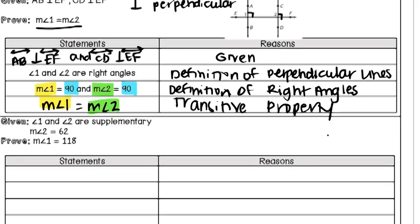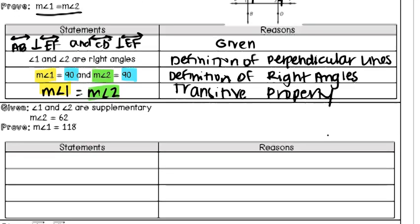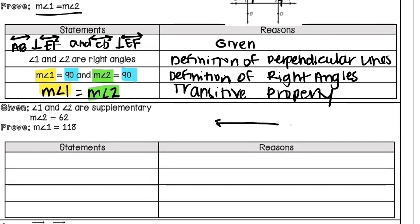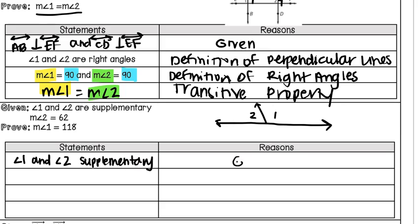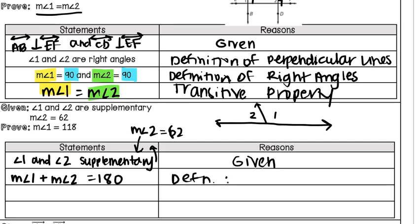In our next example, angle 1 and angle 2 are supplementary, and the measure of angle 2 is 62. If it helps to visualize, you can draw a diagram — angle 2 is 62 degrees, so that would be the acute angle. We fill in given information: angle 1 and angle 2 are supplementary — reason: given. We also include that the measure of angle 2 equals 62 — also given. Then, because they are supplementary, we claim the measure of angle 1 plus the measure of angle 2 equals 180, using the definition of supplementary angles.